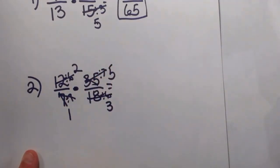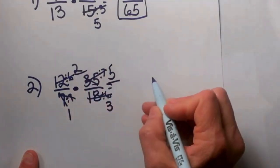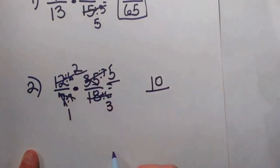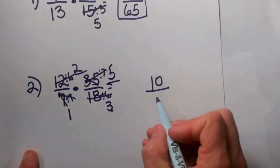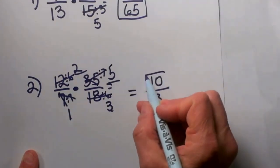So what do we have left to multiply together? Let's see, 2 times 5 is 10 and 1 times 3 is 3. So my answer is 10 thirds.